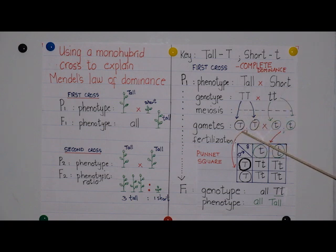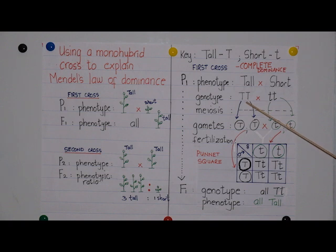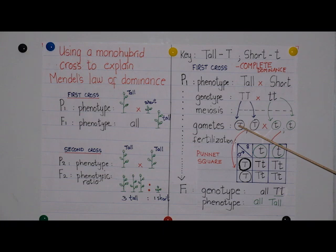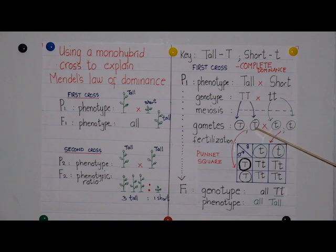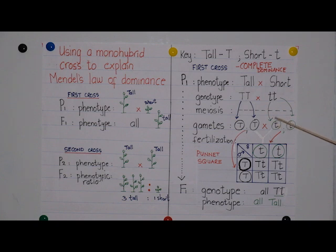After meiosis, gametes are formed. Remember Mendel's law of segregation: the two alleles separate so that each gamete only gets one allele for each characteristic. The same thing happens in meiosis — during metaphase the two alleles are together on corresponding positions on homologous chromosomes, and during anaphase when the homologous chromosomes separate, the alleles also separate, so each allele goes into a different gamete. For the tall parent, capital T goes into one gamete and capital T goes into the other; for the short parent, small t goes into one gamete and small t goes into the other.